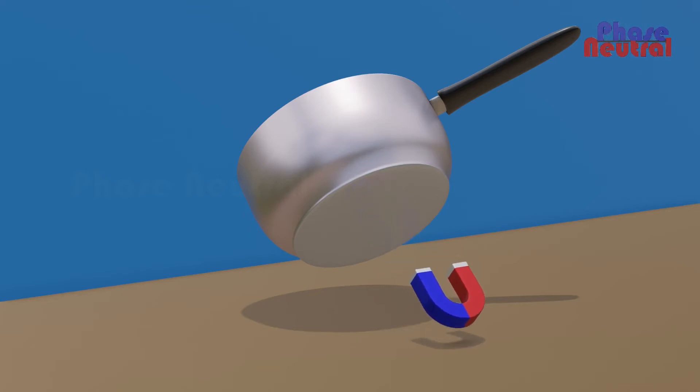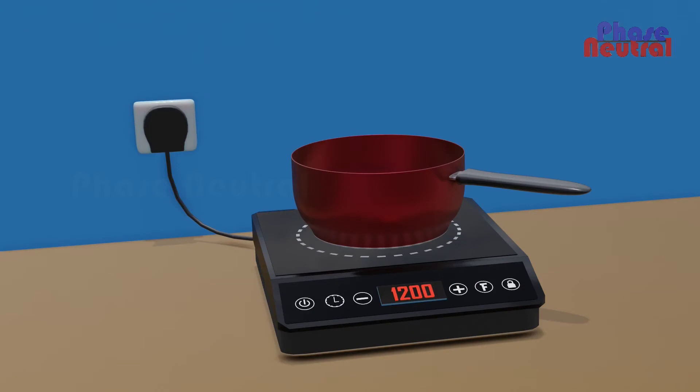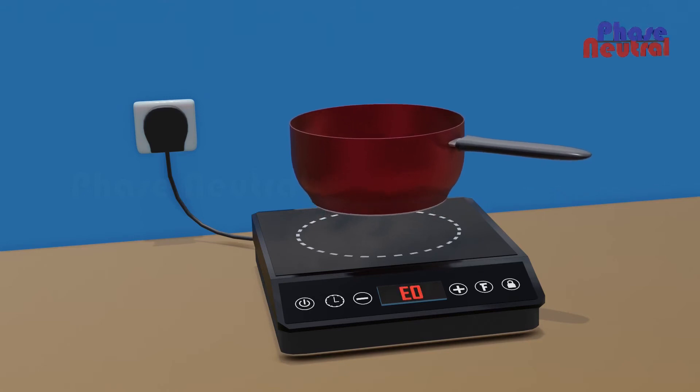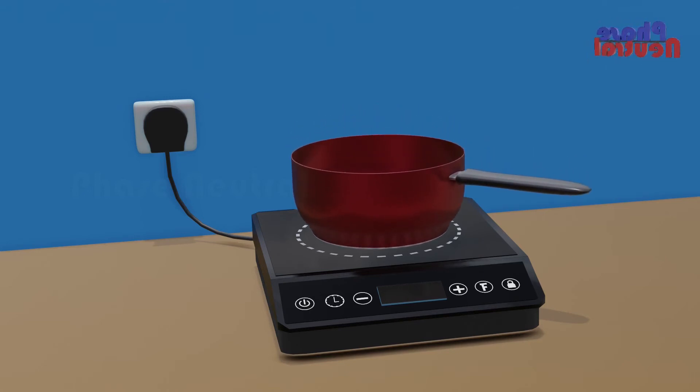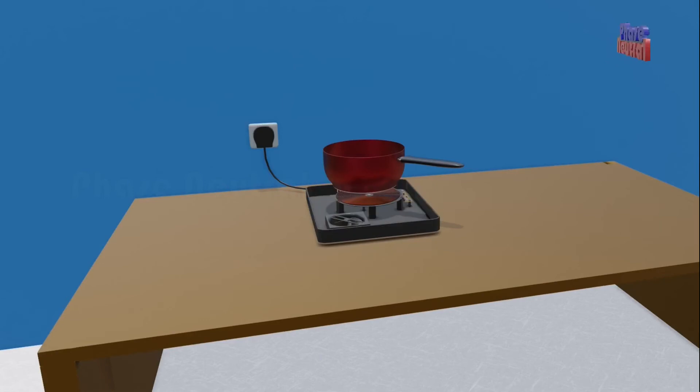You can see when you are taking out the pan from an induction cooktop while working, it stops work and shows an error message because it has a pan detection system.